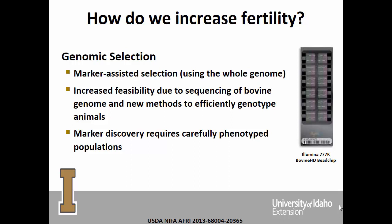A colleague tells a story about genotyping animals years ago when the bill was $1,500–$1,600. Now it is much more reachable. But here's the key: marker discovery in a research setting requires carefully phenotyped populations. We have to understand that yes, this animal is truly pregnant, the records are good, and so on.